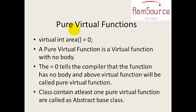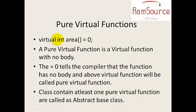If a virtual function has no body or implementation, it is called a pure virtual function, initialized with postfix = 0. If you have one or more pure virtual functions in a class, it becomes an abstract base class, because no implementation is provided in the virtual function.